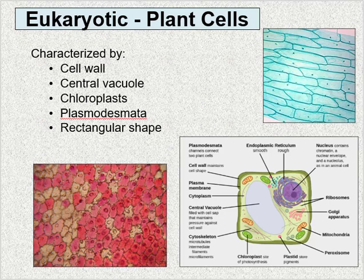Eukaryotic cells have three main things that prokaryotic cells don't: a membrane-bound nucleus, numerous membrane-bound organelles, and linear chromosomes. Organelles are basically little organs that operate inside the cell — each with specialized cellular functions, just as your body's organs have specialized functions. The two types of eukaryotic cells you'll hear most about are plant cells and animal cells, which share many similarities but have a few notable differences.